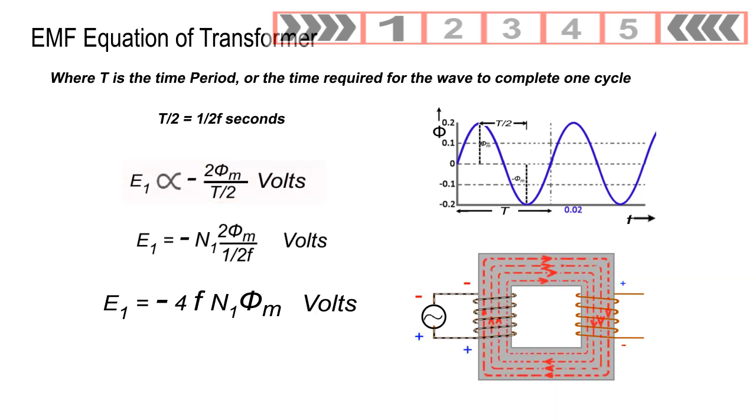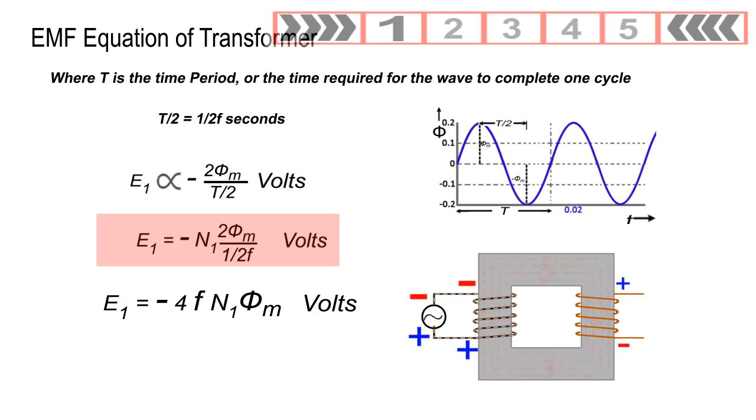Now, this will equal E1 equals N1 times 2φM by 1 by 2f volts. Here N1 represents number of turns in primary winding, and the minus sign shows that the induced EMF in primary winding is in opposition to flux and hence the applied voltage V1.